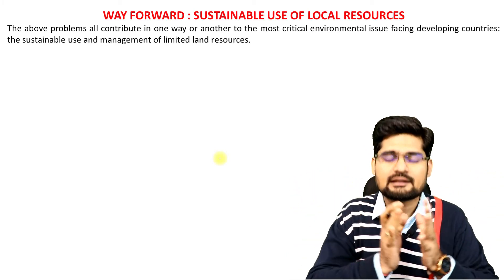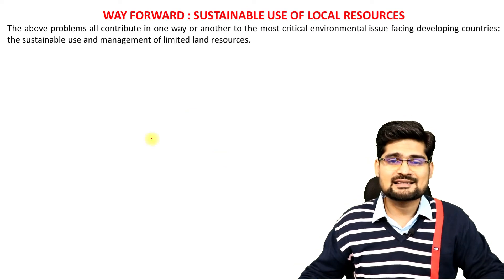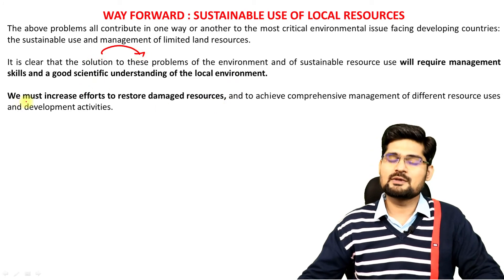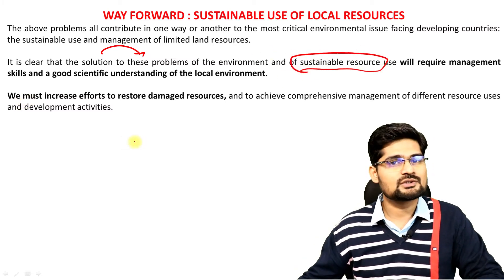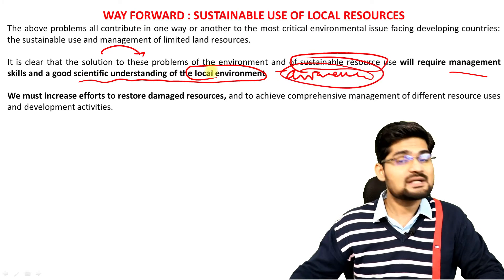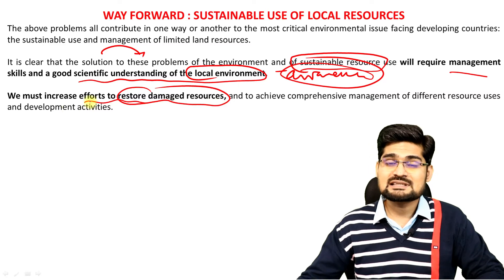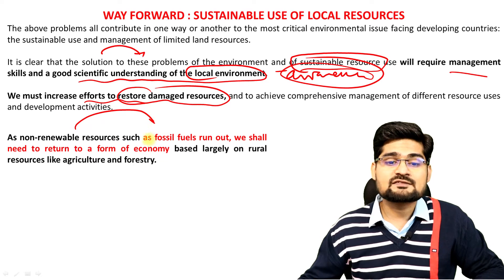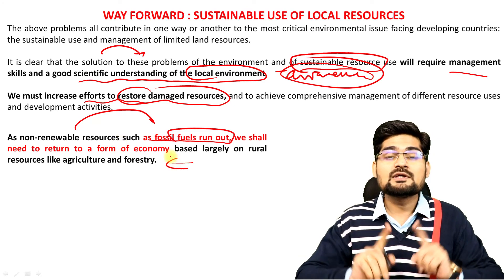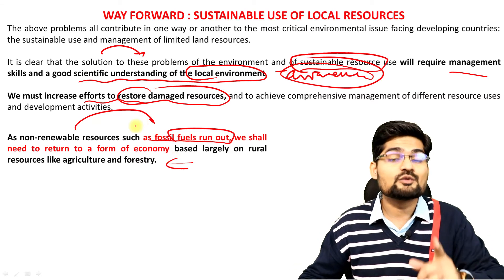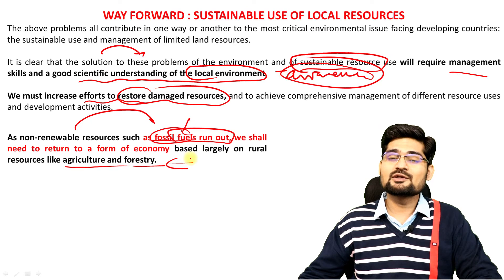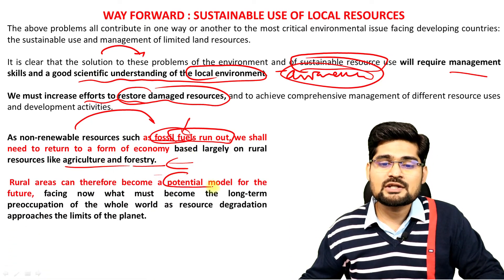If these are the problems in rural areas, then what is the solution — the way forward? The sustainable practices that we say — sustainable development — working towards sustainability of local resources. The solution to these problems requires management skills and good scientific understanding of local environment, meaning education and awareness is the major factor. We must increase efforts to restore damaged resources. As non-renewable resources such as fossil fuels run out, we will again be dependent upon renewable sources of energy, and for that, rural economy and rural land use need to be strengthened. Rural areas can therefore become a potential model for the future.